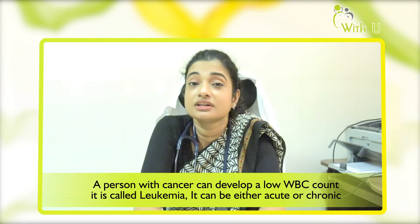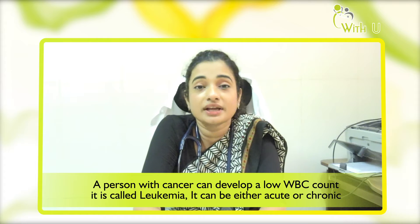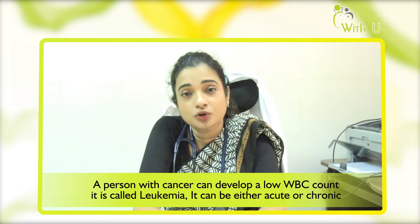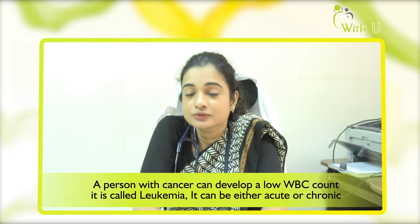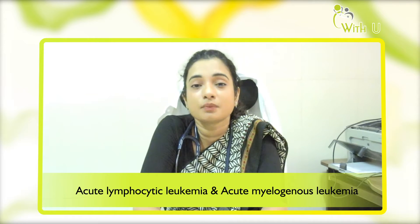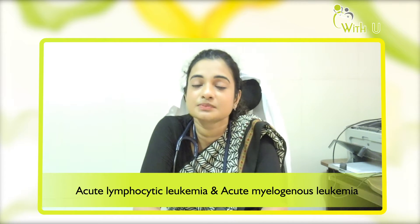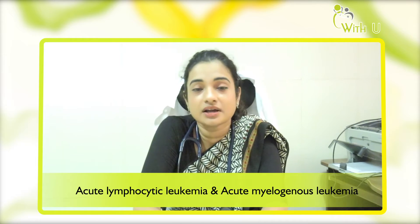So what are the kinds of blood cancer? When it affects your WBCs, it is called leukemia. It can be acute or chronic. There are two types of acute leukemias: acute lymphoblastic leukemia and acute myeloid leukemia. Acute lymphoblastic leukemia is more common in children, and acute myeloid leukemia is more common in adults.